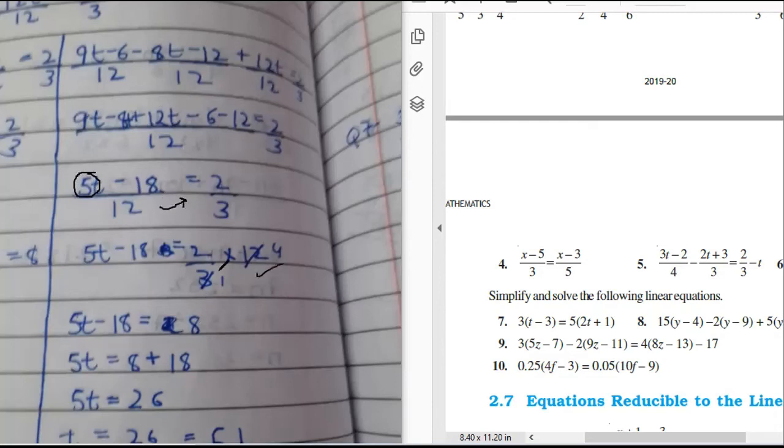So again, this part is incorrect. Rest I will check. 12 is going to the other side, 12 is getting subtracted. 4 to 8. Now 18 is coming to this side as 26.